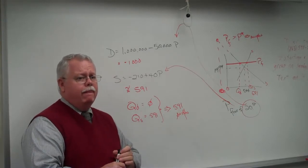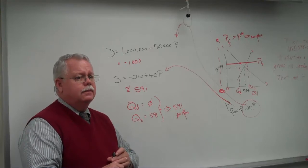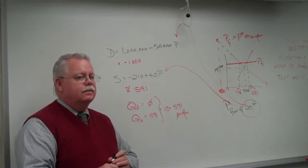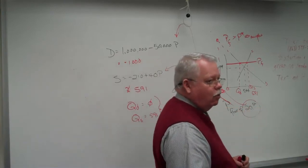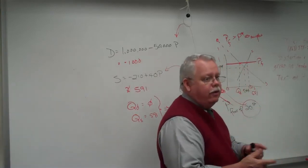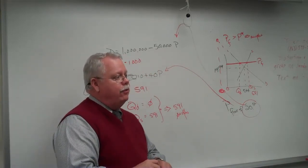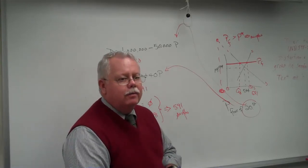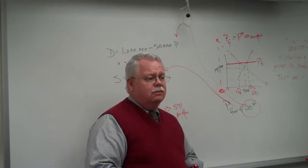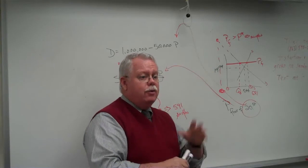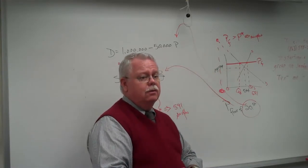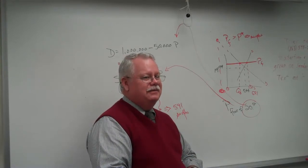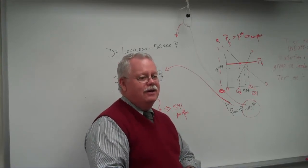Price floor means it can't go below that price — a price floor is a minimum legal price. If you sell below the floor, you go to jail. Price ceiling is the other way — you can't charge above that price. So if the price ceiling on gasoline was $14 a gallon, what effect would that have on the market? Not much — zero. We'd still be at our equilibrium price, which is way below $14 a gallon. So when the price ceiling is above equilibrium, it doesn't have any effect at all.